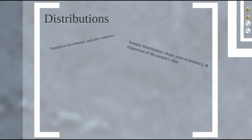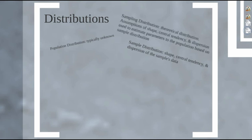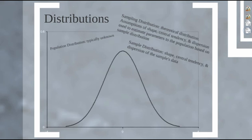What sampling can do is tell us the shape, central tendency, and dispersion of the population distribution — it can give us insight using sample data. It does this through the idea of a sampling distribution. Using the central limit theorem, the sampling distribution is a theoretical distribution that creates assumptions of shape, central tendency, and dispersion, and uses those to estimate the parameters of the population based on the sample distribution.